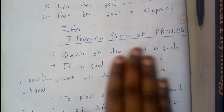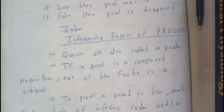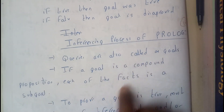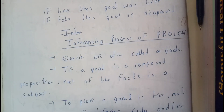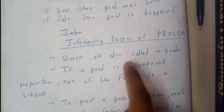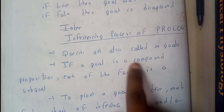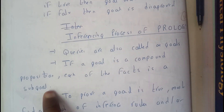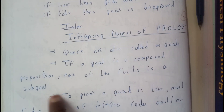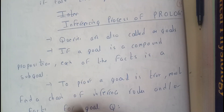Hello guys, we are back with our next tutorial. In this tutorial, let us go through the inferencing process of Prolog. Queries are also called as goals — a query is nothing but a question that may be true or false. So that is indirectly a goal. If a goal is a compound proposition, each of the facts is a sub-goal.